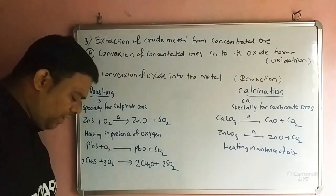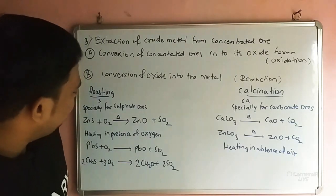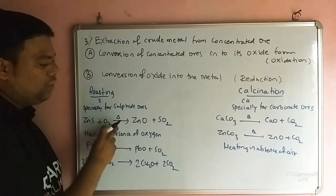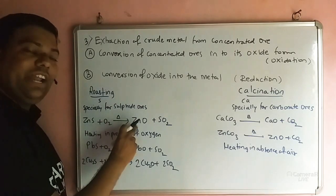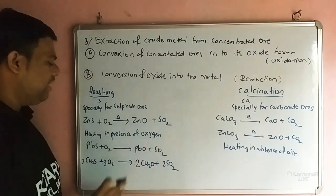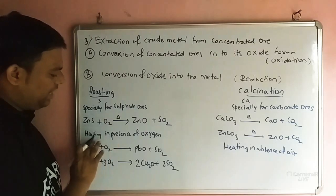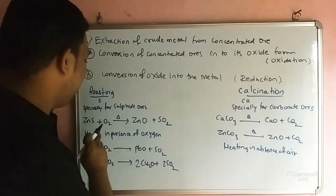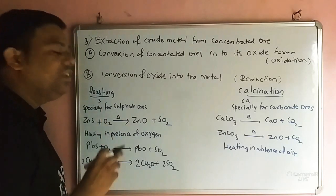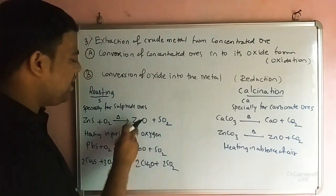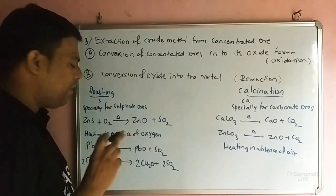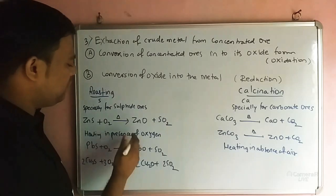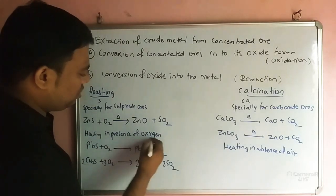For example, take zinc blende (ZnS). When you oxidize this, it converts into ZnO along with sulfur dioxide. This heating is done in the presence of oxygen.